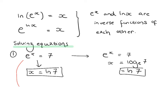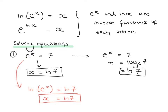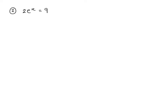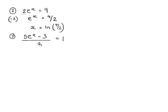For the next example, it's easy to go wrong by leaping straight to taking logs — but the 2 here is in the way. So the first step is to divide by 2: e to the x equals 4.5, or 9 over 2. Then x equals ln of 9 over 2. We can evaluate this on the calculator, but it's nice in exact form.